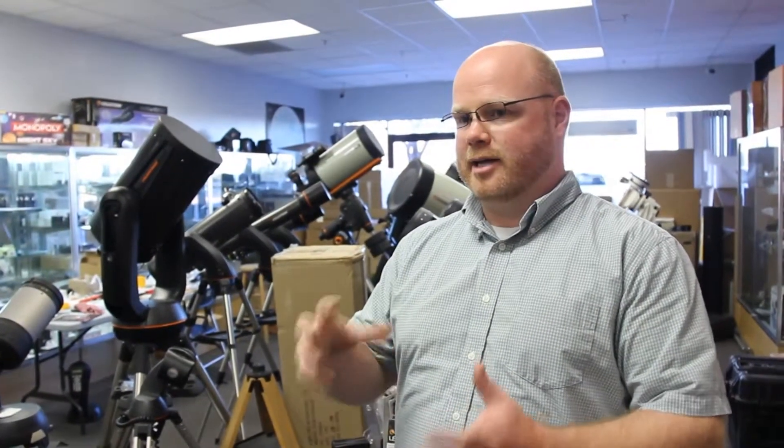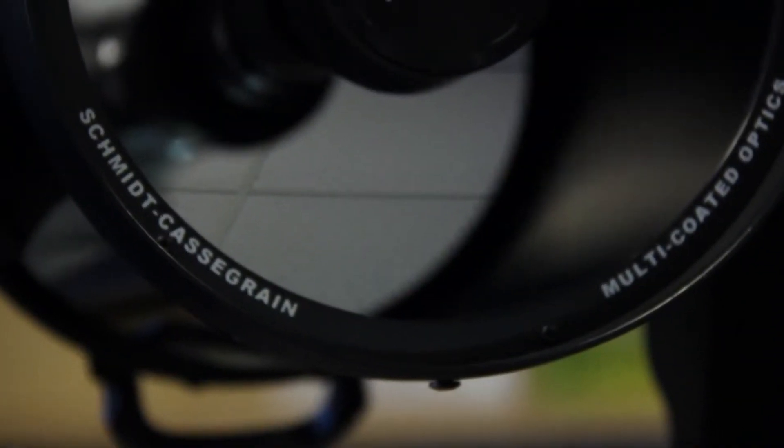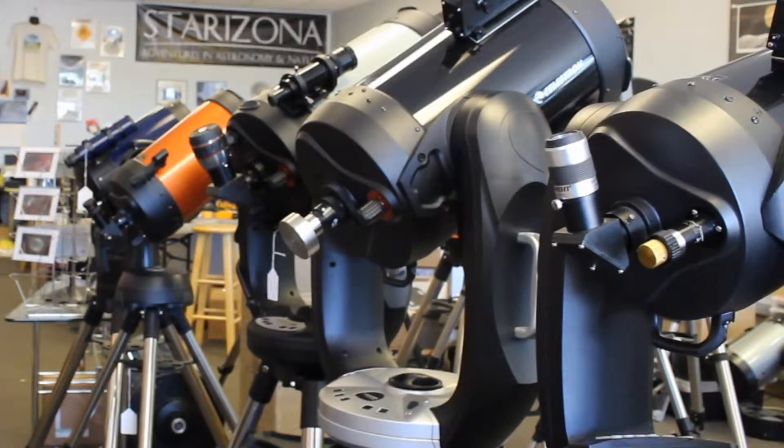Our main thing is what's called a hyperstar lens, and it's a lens that goes onto a Schmidt-Cassegrain type telescope like these. It converts the telescope from f10 to f2, so it makes it 25 times faster photographically. People are able to take pictures in a matter of minutes that otherwise would take hours to take pictures of the nebulas and things like that.